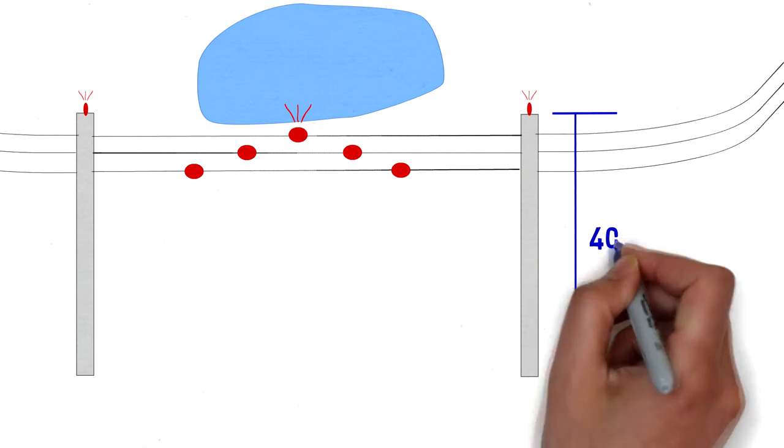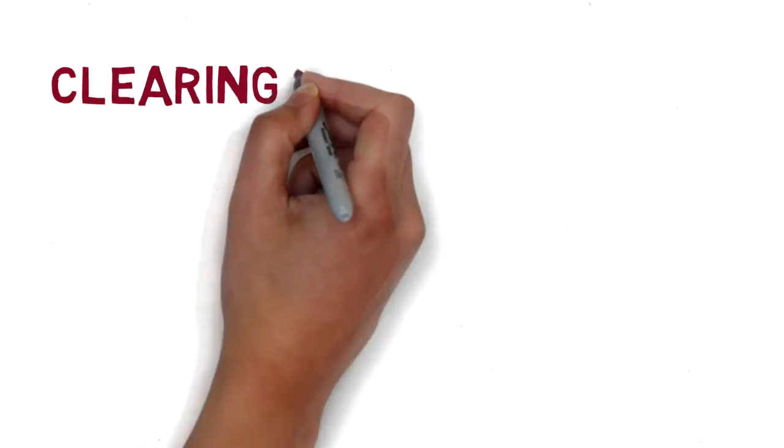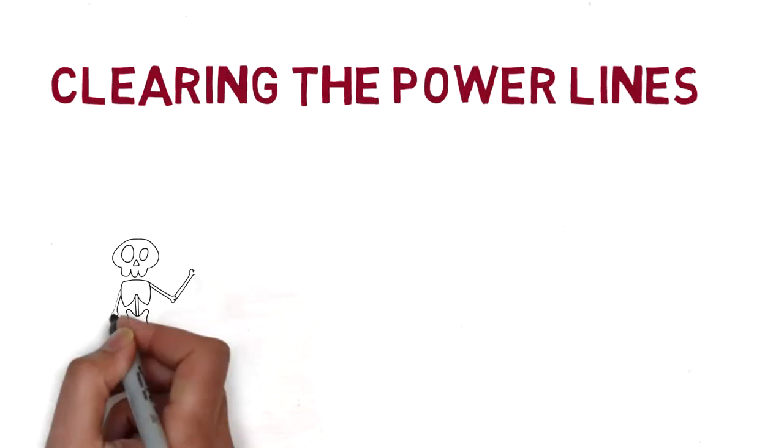The power lines are approximately 40 feet above ground level, which puts them about 70 feet MSL, as our field is 30 feet above sea level. So let's talk about clearing the power lines.